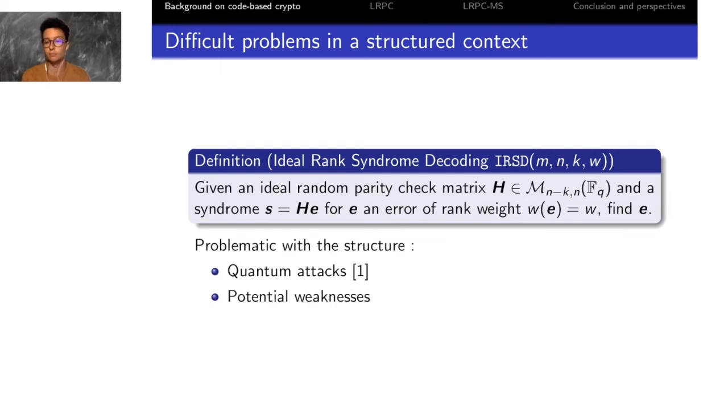The problem with that approach is that your difficult problem is not the pure syndrome decoding problem, but is a structured version of this problem. For example of the rank metric, you have to deal with the ideal rank syndrome decoding problem, which cannot be reduced to the original rank syndrome decoding problem. So you have to assume the difficulty of this ideal problem, and the problematic with the structure is that it can open potential weaknesses in your cryptosystem.